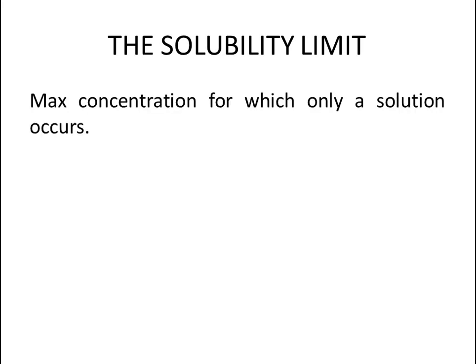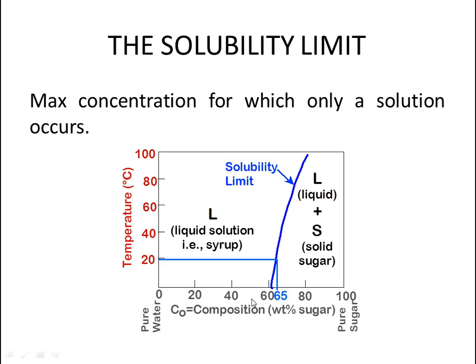The solubility limit is the maximum concentration for which only a solution occurs. Looking at the sugar-water diagram: horizontally, the composition ranges from pure water (0% sugar) on the left to pure sugar (100% sugar) on the right, showing weight percentage of sugar at 0%, 20%, 40%, 60%, 80%, and 100%. Vertically, temperature ranges from 0 to 100 degrees Celsius. The line shown is called the solubility limit.